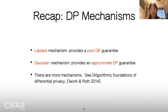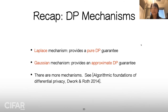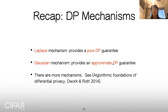There is a difference between Laplace and Gaussian mechanisms: one gives pure epsilon-DP, the other gives approximate (epsilon, delta)-DP. Regarding the noise being inversely proportional to epsilon — remember that epsilon is the allowed privacy loss. If you allow large privacy loss, you don't need to add much noise. That's why the noise scale is inversely proportional to epsilon. There are many more mechanisms beyond these two; you can look them up in the textbook 'The Algorithmic Foundations of Differential Privacy' by Dwork and Roth.